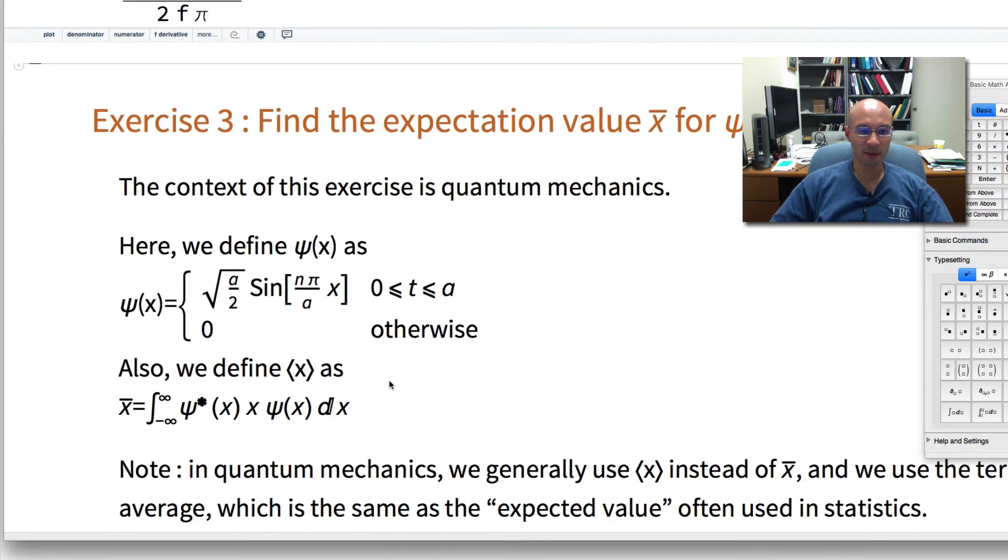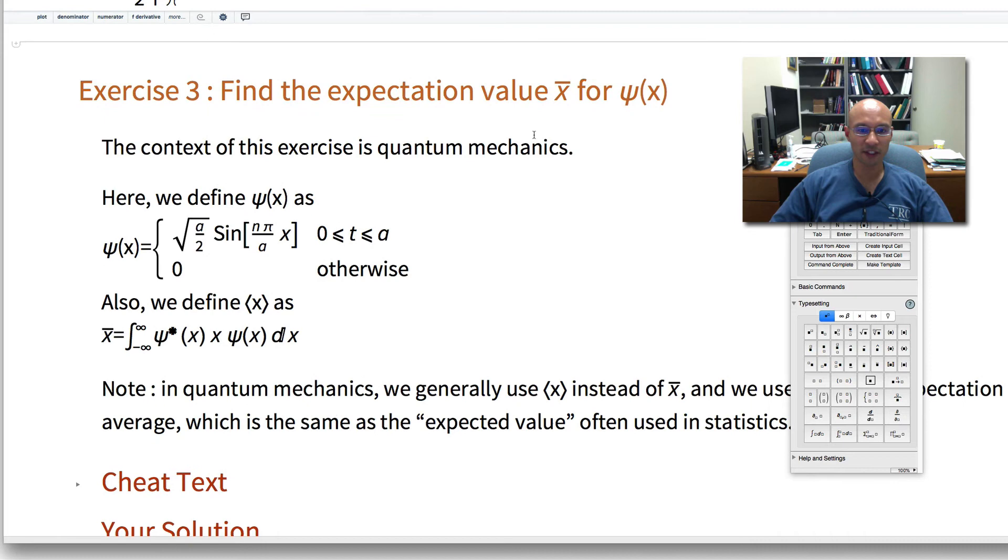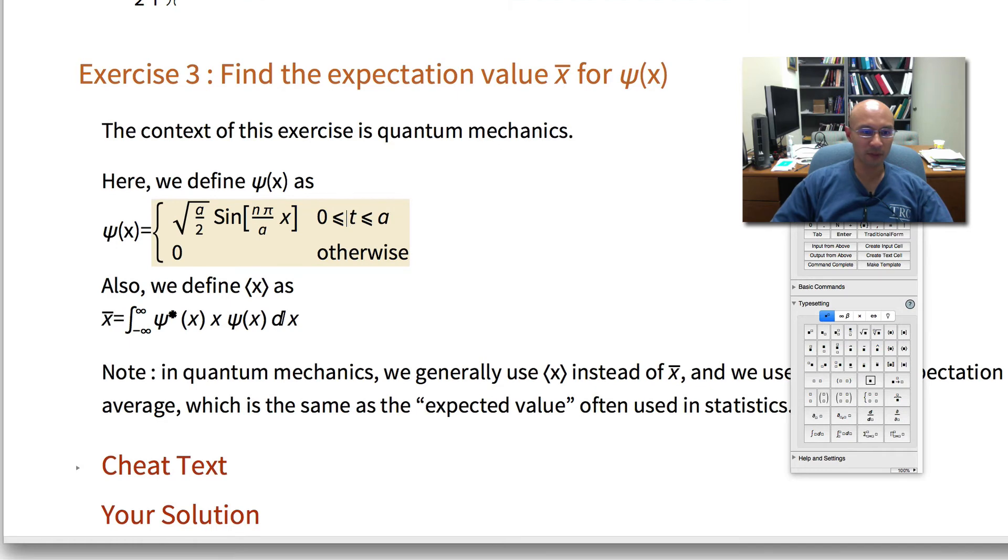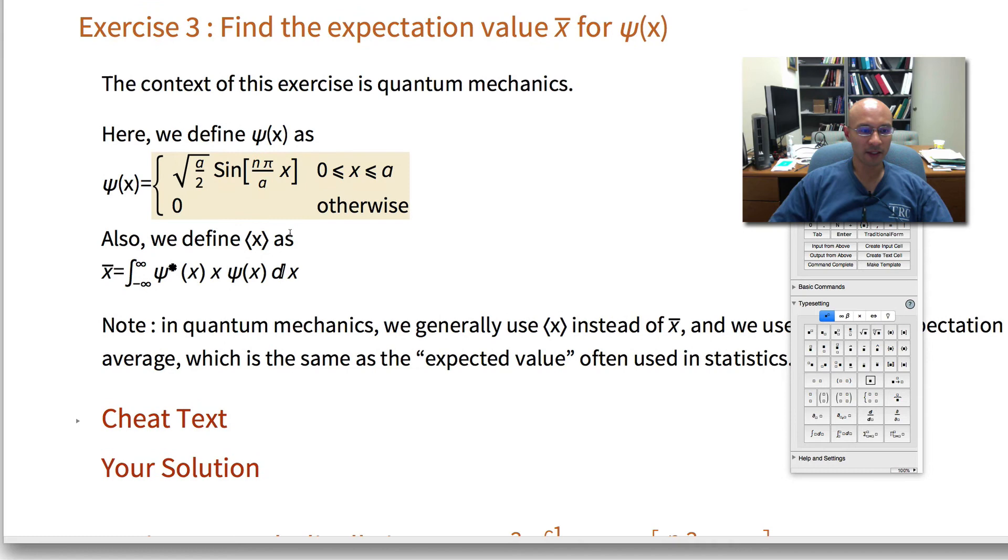Now here's another example. Let's find the expectation value for psi of x. And here I've defined psi of x for you. It's 0 outside of the range 0 to a. I put in a typo here. Let's make that x. Okay.